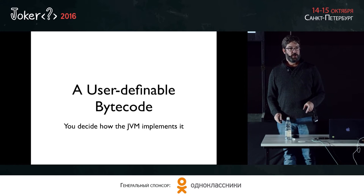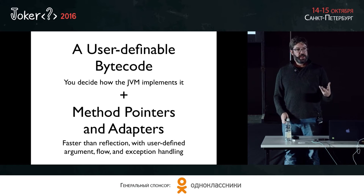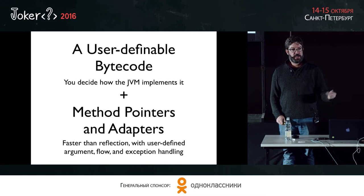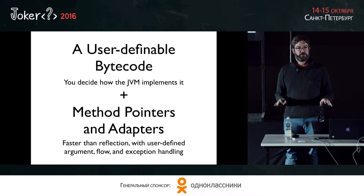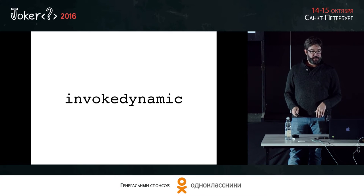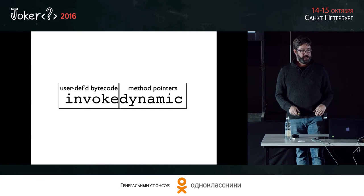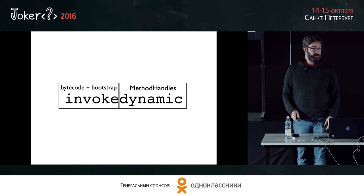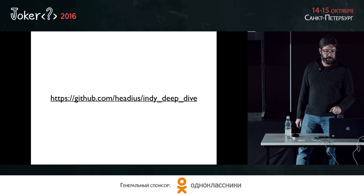There are really two things that come along with Invoke Dynamic. There is the bytecode — the Invoke Dynamic bytecode added to the JVM spec. But there's also the idea that we now have real method pointers called method handles, that are faster than reflection, can be passed around as an object, and are essentially function pointers. The two things combined give us a tremendous amount of flexibility. That's Invoke Dynamic: a user-defined bytecode with a set of method pointers and ways of manipulating method calls. The code is also available on GitHub if you want to look at examples offline.